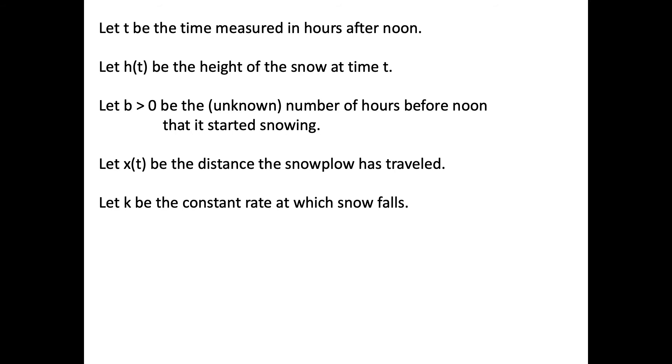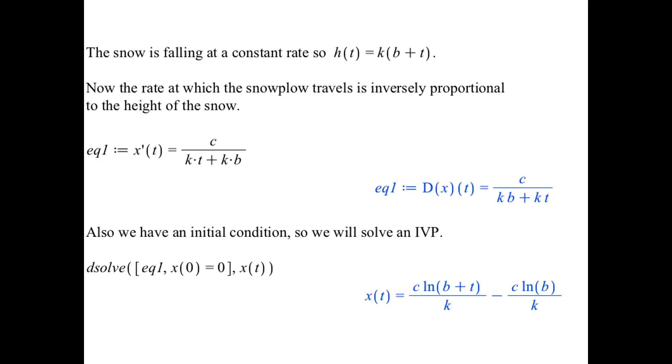This is what my students said. They realized after a while they probably didn't need h of t, but this is what they did. When we used Maple to solve the problem, the biggest thing is what does it mean to say the snow is falling at a constant rate? What's the rate at which the snow plow travels is inversely proportional to the height of the snow? Virtually everybody agreed they didn't need that extra c. It turned out fine.